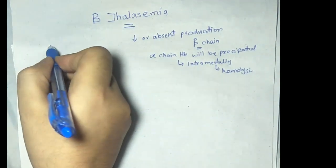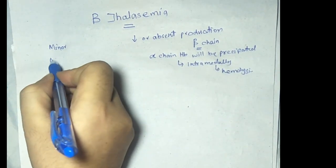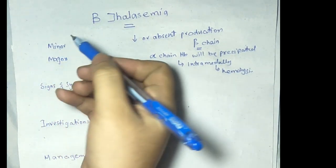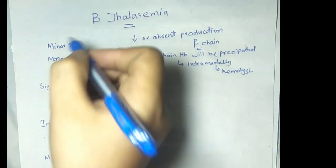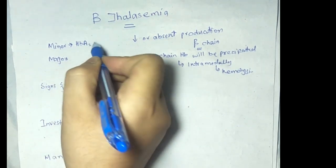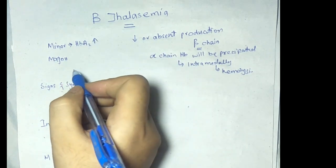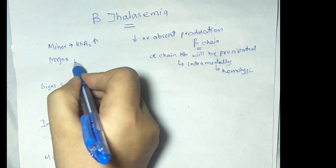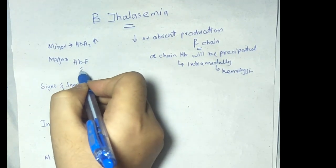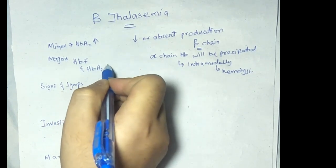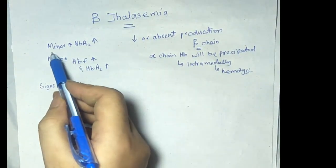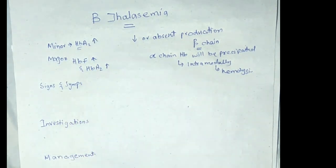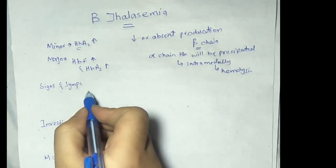There are two types of beta thalassemia: beta thalassemia minor and beta thalassemia major. In beta thalassemia minor, on hemoglobin electrophoresis, we will see hemoglobin A2 is increased. In beta thalassemia major, both hemoglobin F and hemoglobin A2 are increased. In minor, only hemoglobin A2 will be elevated.